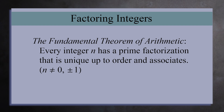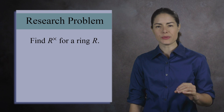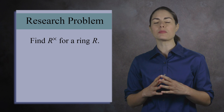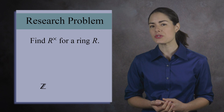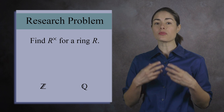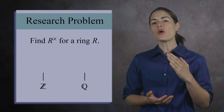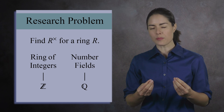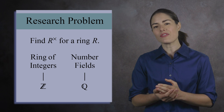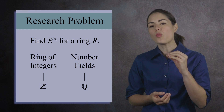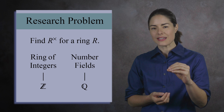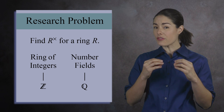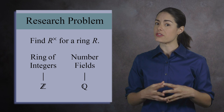The problem of finding the units in a ring is a major topic in number theory, because the integers and the rational numbers have been generalized into extensions called the ring of integers and number fields. Many problems in number theory require an understanding of how many units there are and what the structure of this group is. Describing the group of units is a difficult problem that is still being researched today.